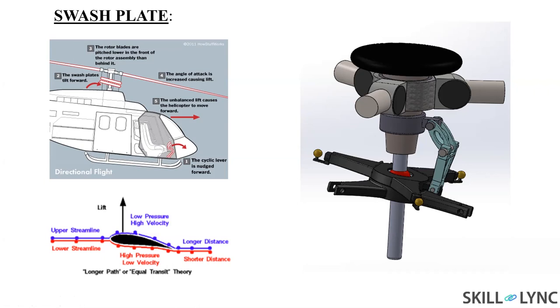It works under the Bernoulli's principle. If the pressure increases, the velocity decreases. If the pressure decreases, velocity increases, and vice versa. On the bottom side the red color indicates high pressure with low velocity.